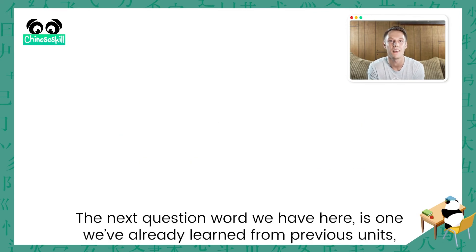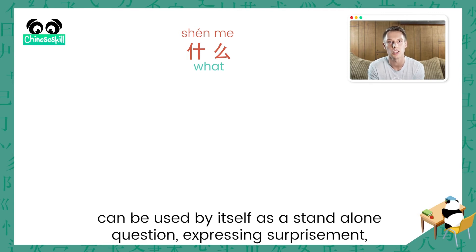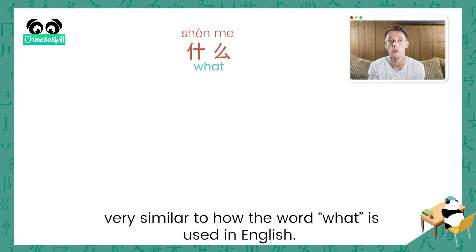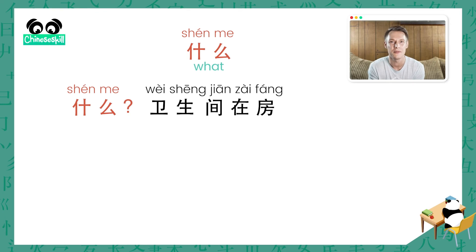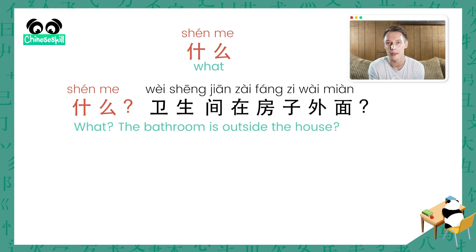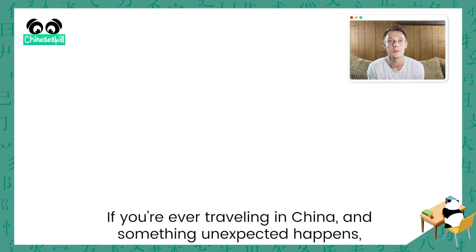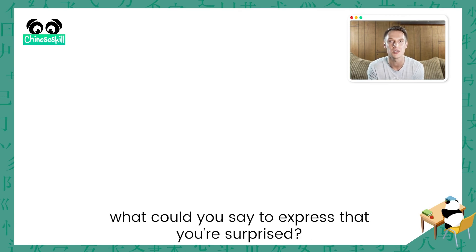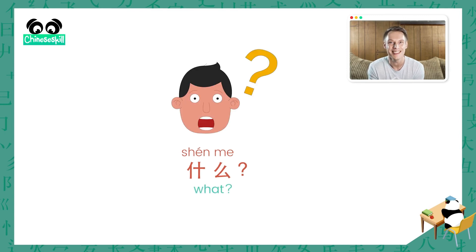The next question word is one we've already learned: 什麼, which means 'what'. 什麼 can be used by itself as a standalone question expressing surprise, very similar to how 'what' is used in English. For example, 什麼, 衛生間在房子外面 — what, the bathroom is outside the house? Or 什麼, 你有十隻貓 — what, you have 10 cats? If you're ever traveling in China and something unexpected happens, you can say 什麼 to express surprise.